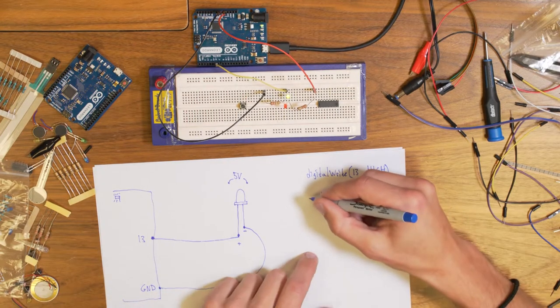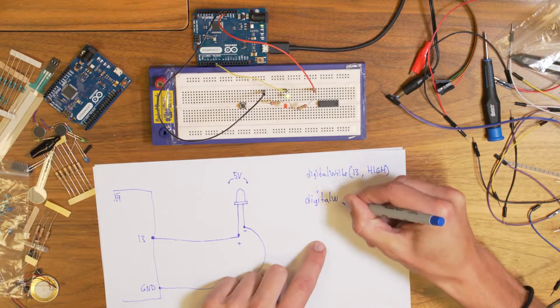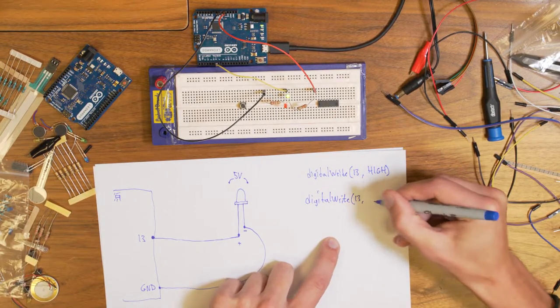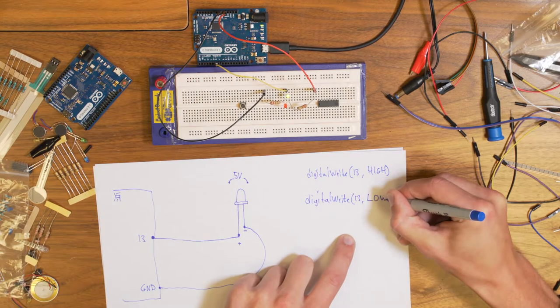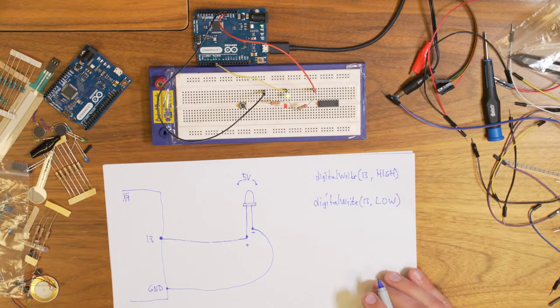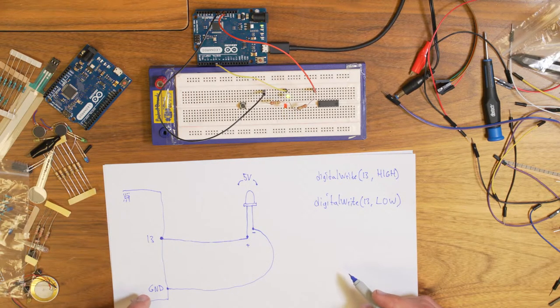We could do it the other way around, because if you write low to a pin, that is basically saying set the voltage to zero. Set the voltage to ground.